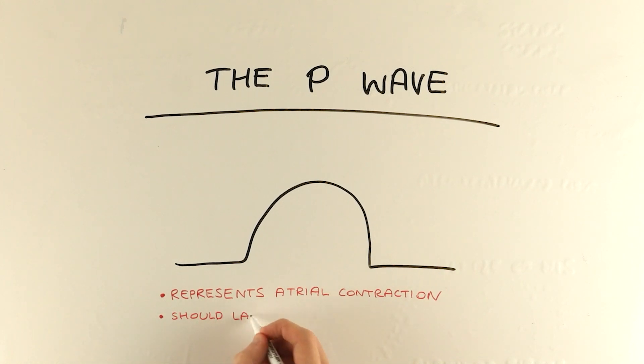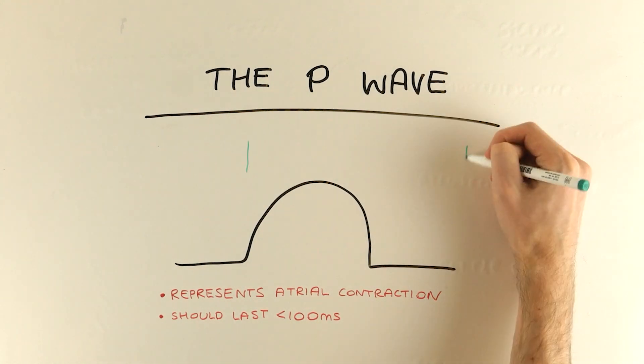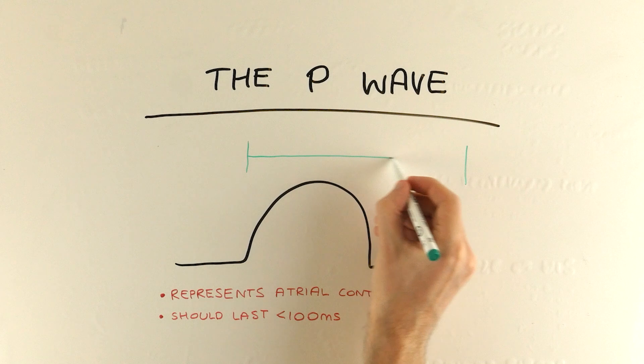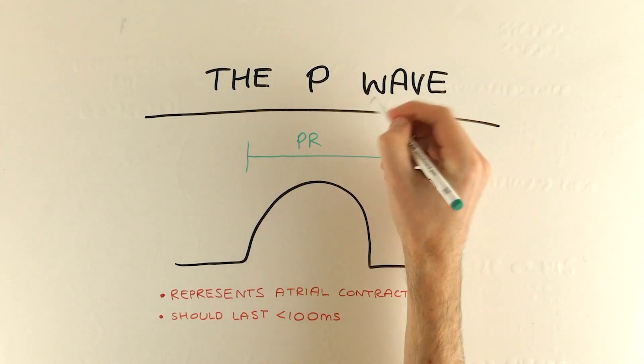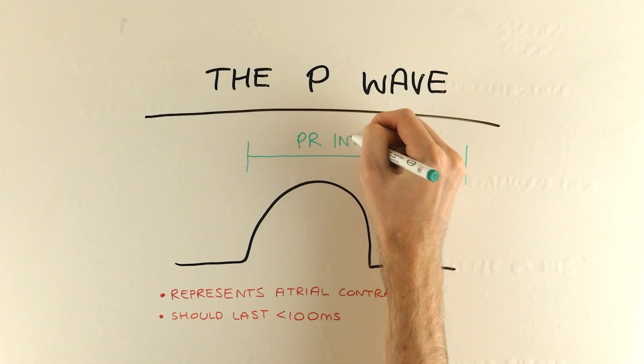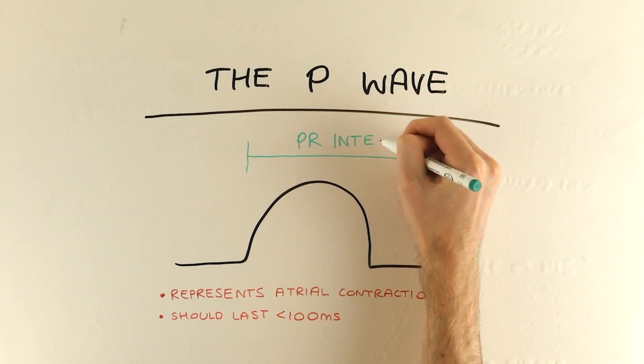Be sure to check out the companion video on the cardiac myocyte action potential so you understand how this muscular contraction works. As you'll be aware, the signal then has to move from the sinoatrial node to the atrioventricular node, where the signal chain pauses briefly to allow the ventricles time to fill properly.